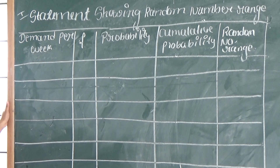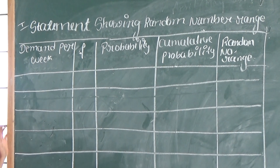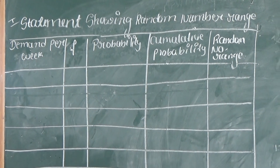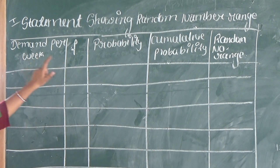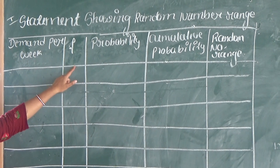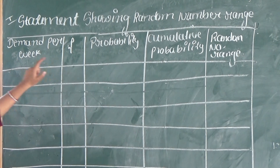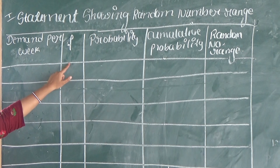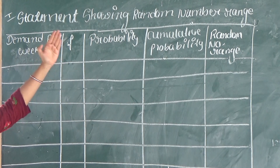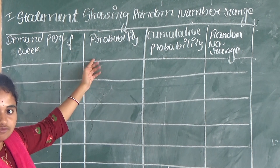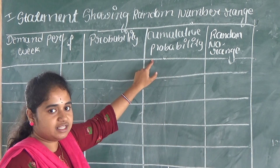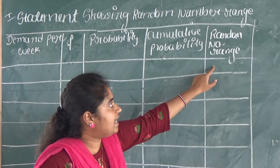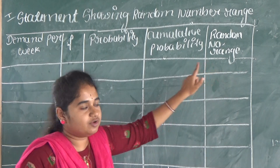The statement showing random number range. The first step is we have to find out the random number range by using demand per week and frequency. So the demand per week and frequency is already given in the question.